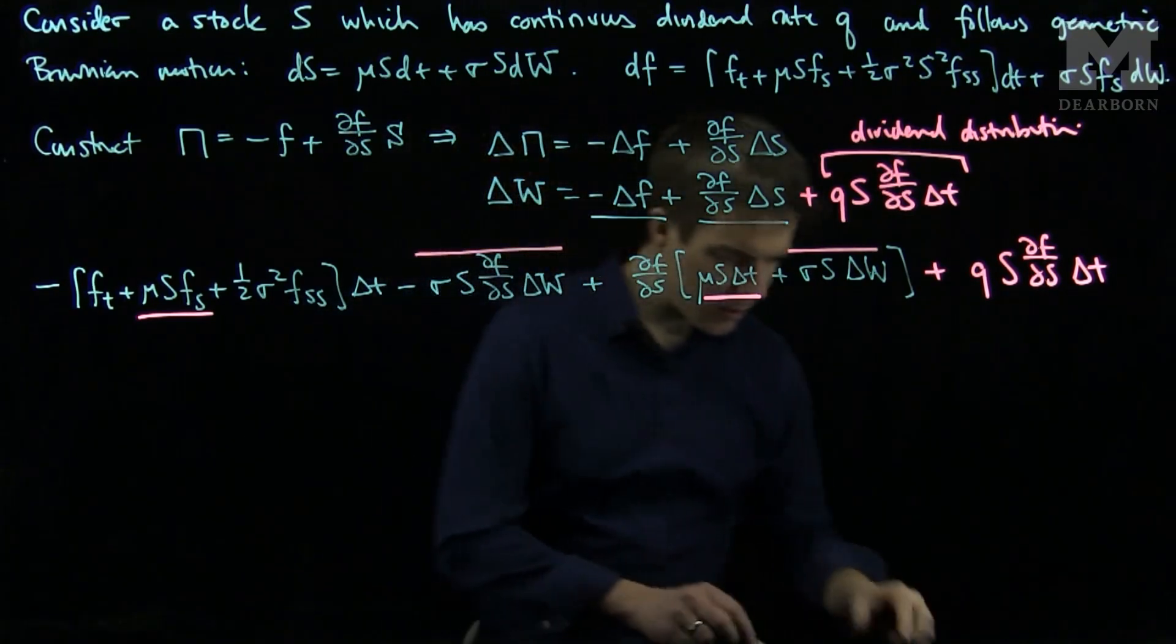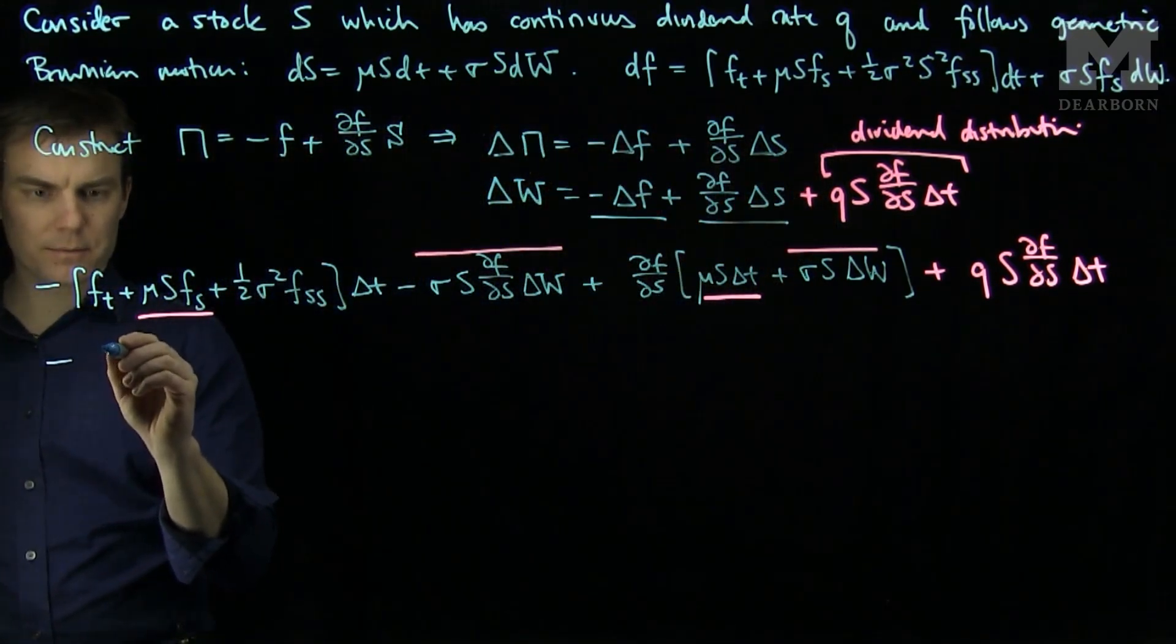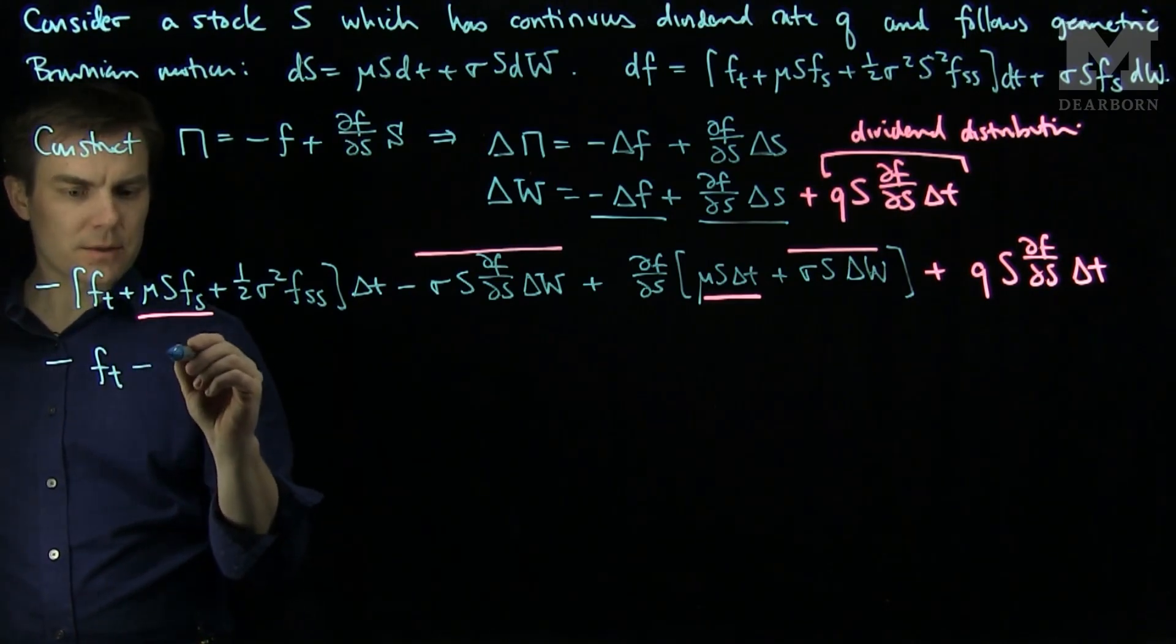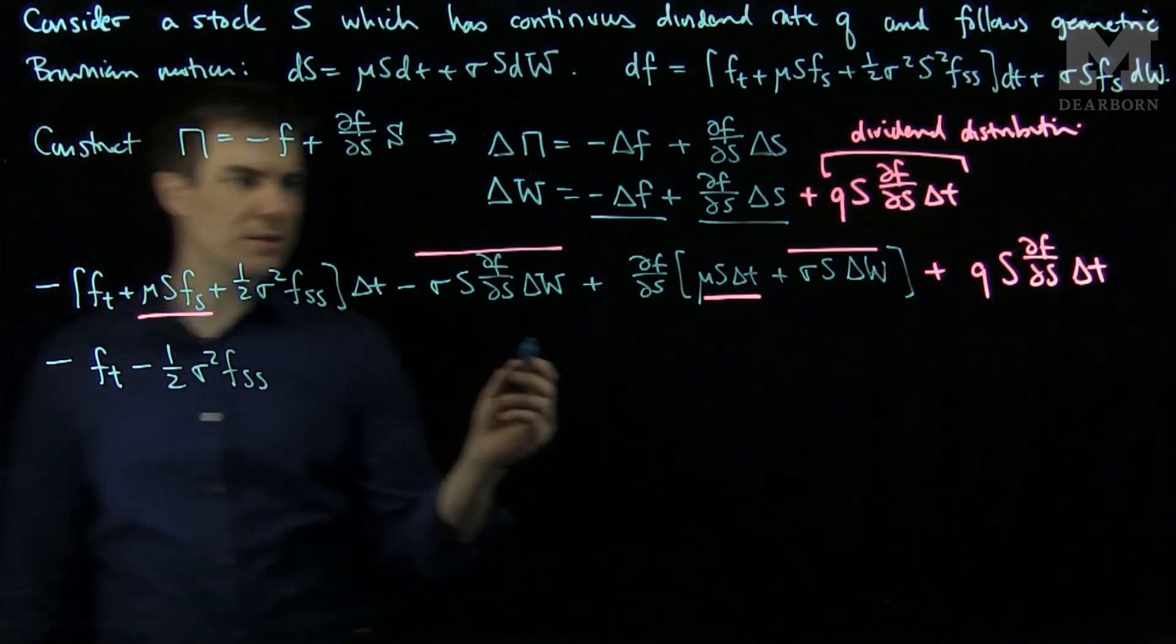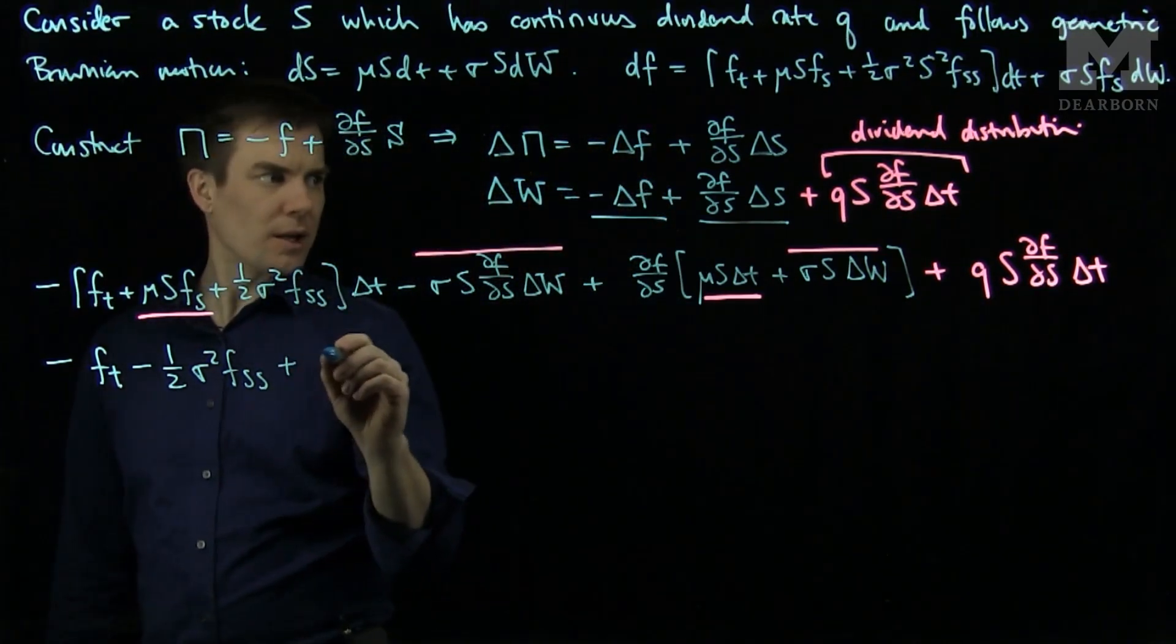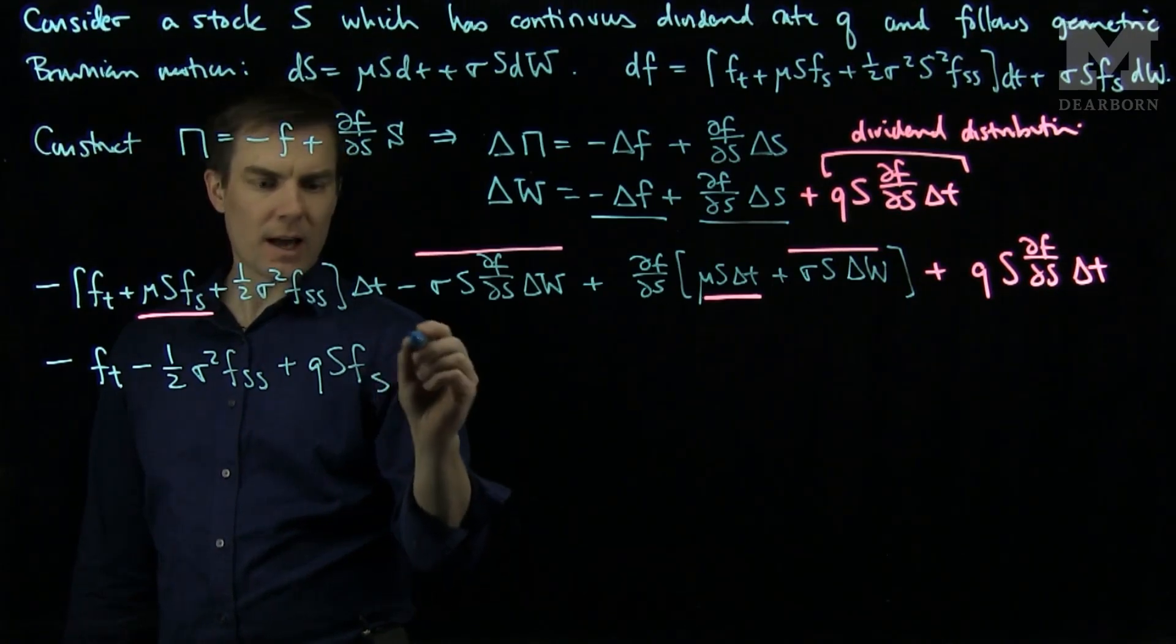And if I combine all the like terms together, I will have negative Ft minus one half sigma squared Fss. And then I will also have this term over here plus QS Fs.